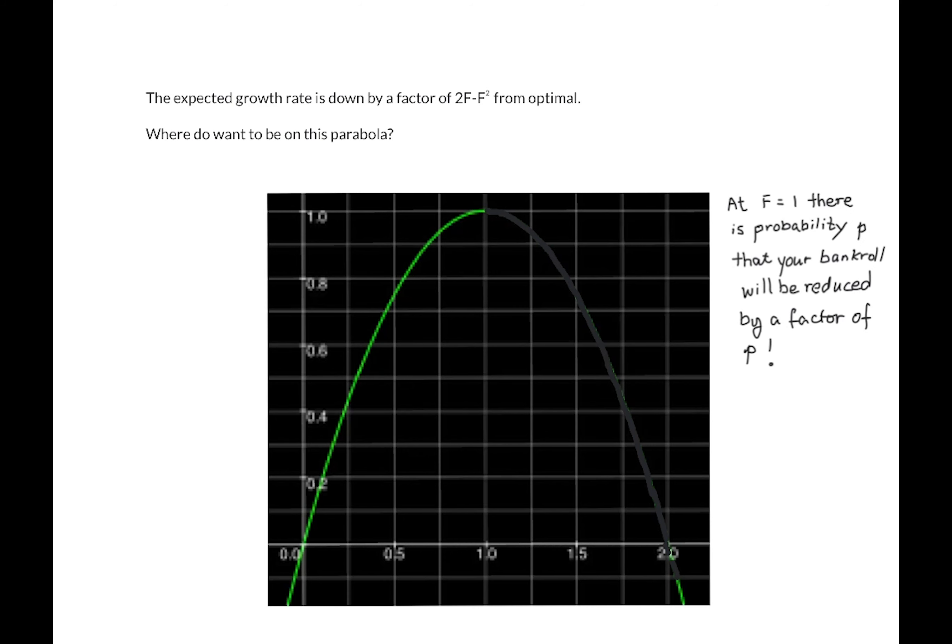Well how risky is Kelly betting? At the full optimal f = 1 there's a probability p that your bankroll will be reduced by a factor of p, and this is true for all probabilities and proportions p. In other words, there's a 50% chance that you'll lose half your money at some point in the future, and the same goes for 10 percent, etc. This doesn't mean you're regularly going to lose most of your money because sometimes you'll double your money before getting cut in half, but what it does seem to indicate is that at f = 1 the ride is a very wild one.